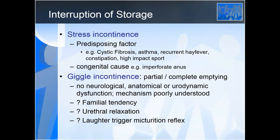Stress incontinence — squirting urine when increasing intra-abdominal pressure — is not common in children, but can be seen in girls with chronic disorders requiring a lot of intra-abdominal pressure generation: cystic fibrosis girls who have to clear secretions, children with hay fever, children who are constipated and have strained, and our runners. With poor development of the pelvic floor, such as following surgery for imperforate anus, the fibres in the pelvic floor muscle will be abnormal and won't support closure pressure.